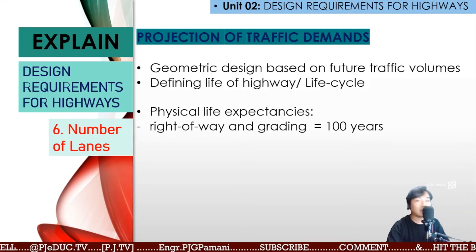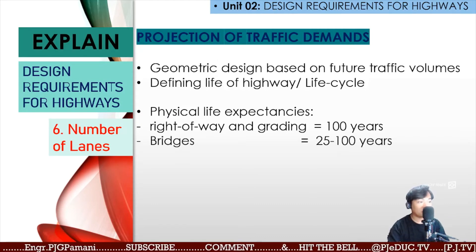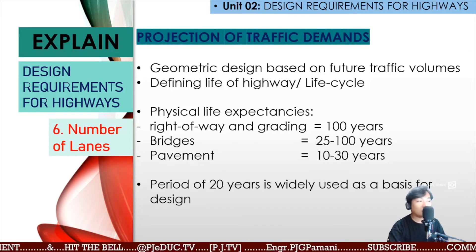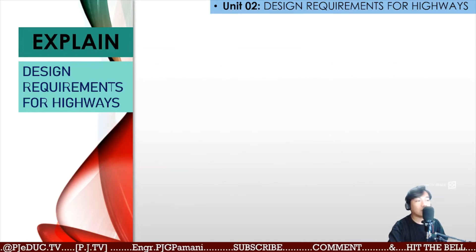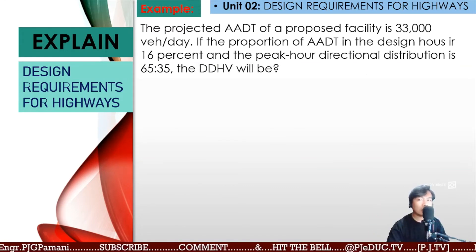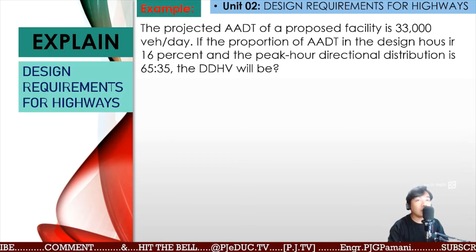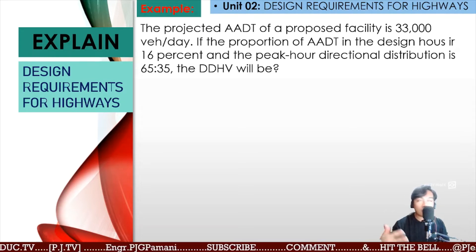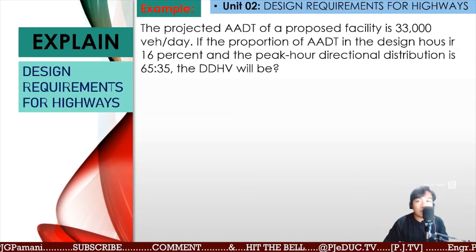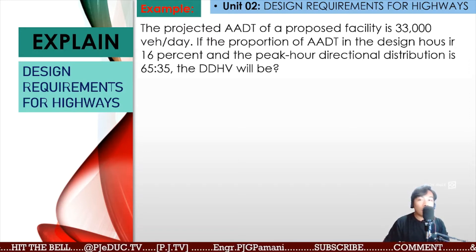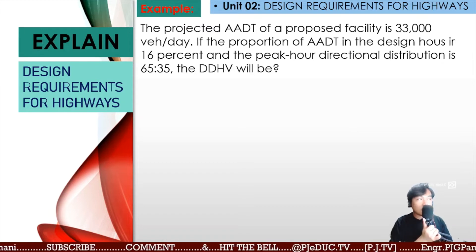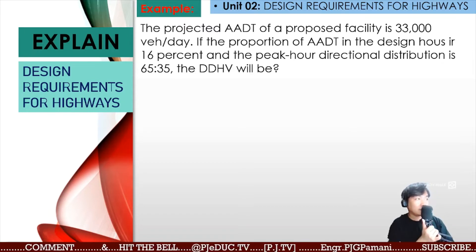Physical life expectancies include: grading at 100 years; bridges at 25 to 100 years before expansion or rerouting; pavement at 10 to 30 years. A period of 20 years is widely used as the basis of design. Pavements, whether concrete or asphalt, are initially designed to last and support a specific number of loads; after that period, the roadway must be rebuilt for maintenance purposes.